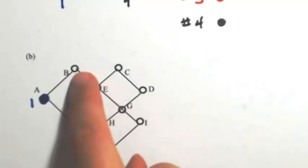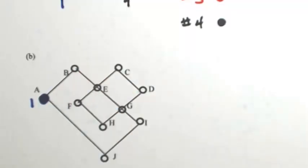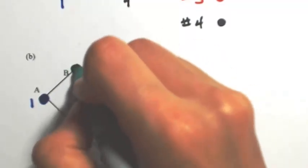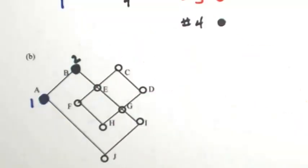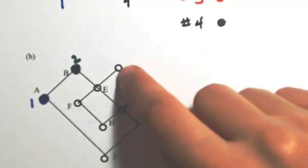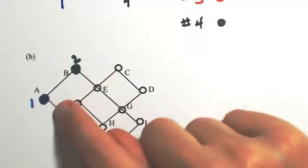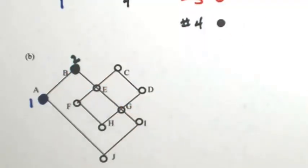The next letter is B. B is connected to A, so I can't use 1 again, so I'm going to go to number 2. The next letter is C, which is not connected to A or B, so I can go back to color 1 again.